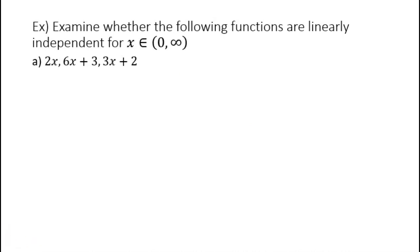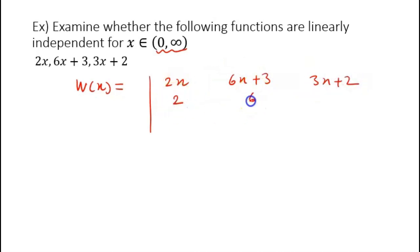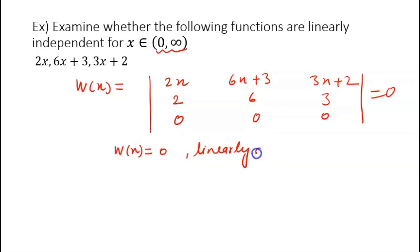For another problem — examining whether 2x, 6x + 3, and 3x + 2 are linearly independent on (0, ∞) — the Wronskian has first row [2x, 6x+3, 3x+2], second row [2, 6, 3], third row [0, 0, 0]. Since the third row is all zeros, W(x) = 0. Therefore the functions are linearly dependent.